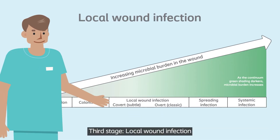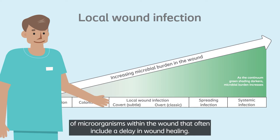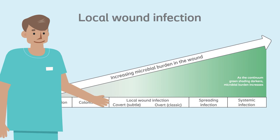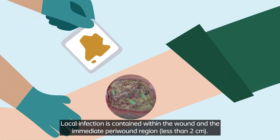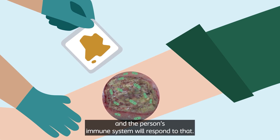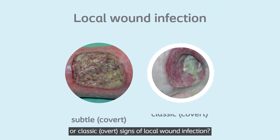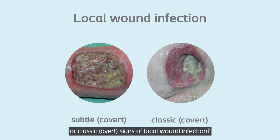Stage 3: Local wound infection. This stage is characterized by the presence and proliferation of microorganisms within the wound that often include a delay in wound healing. Local infection is contained within the wound and the immediate peri-wound region. In this stage, the microorganisms will invade the tissue and the person's immune system will respond. Ask yourself: do you see subtle or classic signs of local wound infection?